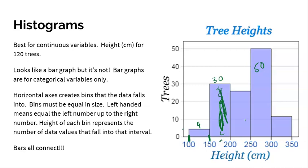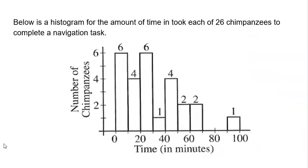Histograms are by far the most often used graph, especially with measurable data. If you've got measurable data with decimals — three or four decimal places — you're definitely going with a histogram. You can also have a relative histogram, where the y-axis shows the proportion instead of the count. For example, if four trees are in a bin out of 120 total, that bin would show the proportion or percentage rather than the raw count.